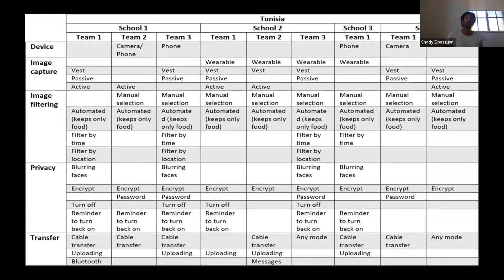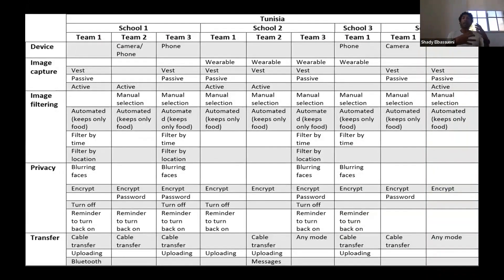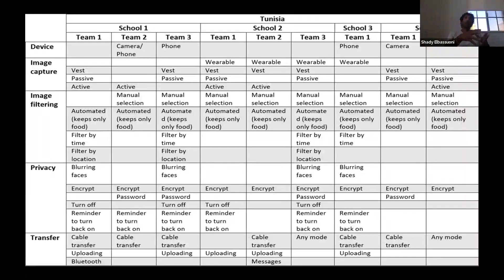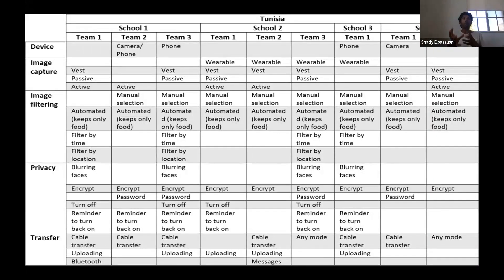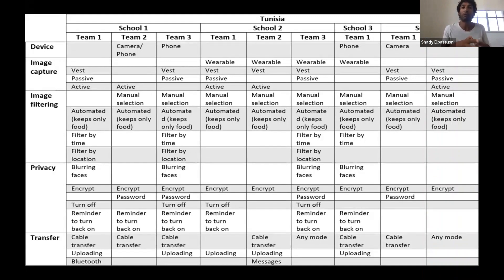Here is an example of the things we were trying to collect from participants in these workshops. For instance, we asked them about the device — if we're collecting images that capture food exposure, should this be done through a camera or through the phone? Should image capturing be active or passive? What should we do with the images we collect — should we filter the ones related to food automatically and remove everything else, or do this manually? We also talked a lot about privacy concerns. I'll focus on results from Tunisia because that's what we have publications about so far.